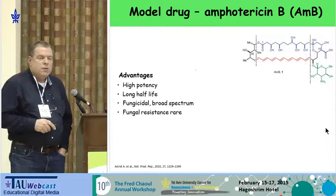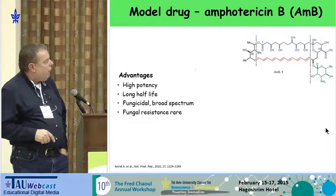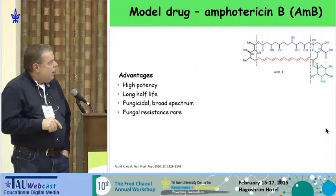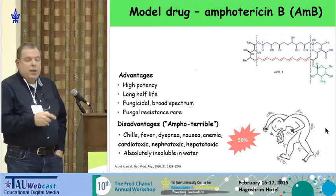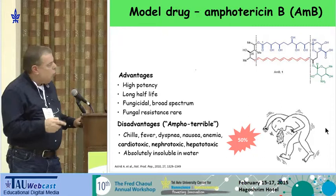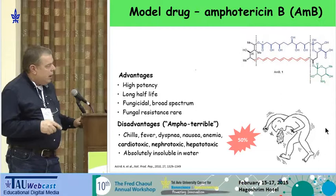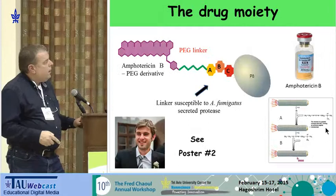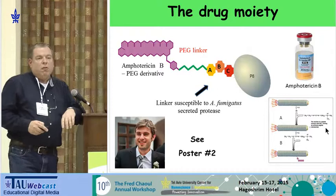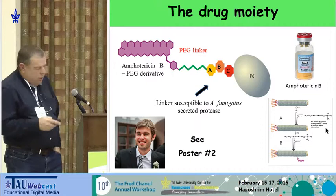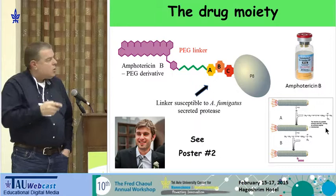Amphotericin B has many advantages: it's a very old drug, used for over 50 years. It's very potent, has a very long half-life, it's fungicidal — meaning it kills the fungi — and there are few cases of resistance. However, it's very toxic and not easy to administer to patients. It has various toxicity mechanisms, and as I mentioned, it's absolutely insoluble in water. To make amphotericin B compatible with our drug delivery systems, we had to solve the solubility problem and additional toxicity problems.